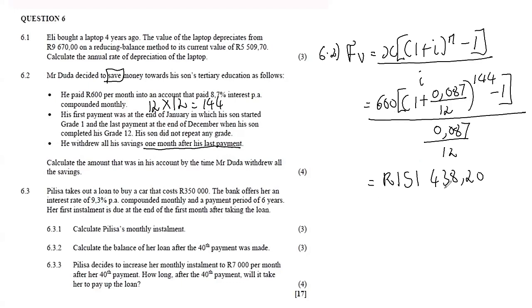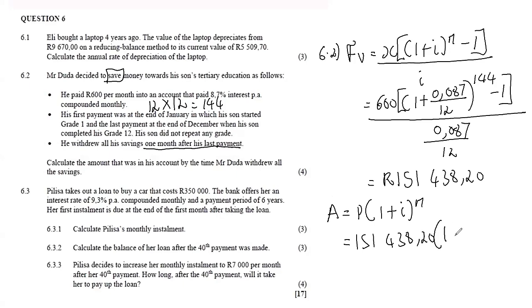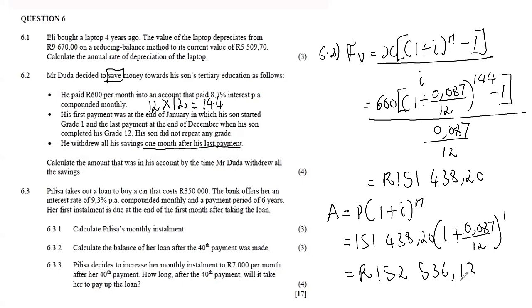We must note that he did not withdraw the money immediately after the last payment — it was left for a further one month, meaning it accumulates interest for that extra month. So R151 438.20 is grown for one more month at the same rate: 151 438.20 times (1 plus 0.087/12)^1, giving R152 536.13. That is the amount he actually withdraws. It was very crucial to note that final statement.